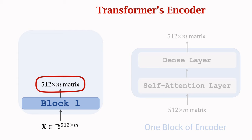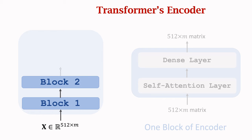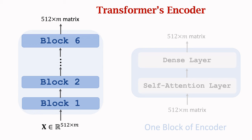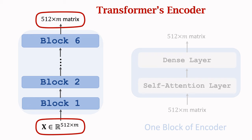Since the input and output have the same shape, skip connections can be applied: the input matrix can be added to the output matrix. Skip connection is a standard trick for improving deep learning. We then build a second block, and the output is also a 512 by m matrix. You can build as many blocks as you want. The transformer's encoder network has a total of six blocks. Each block has its own trainable parameters, not shared across blocks. The final output is a 512 by m matrix, whose columns you can think of as feature vectors extracted from the input sentence.